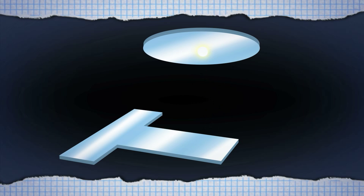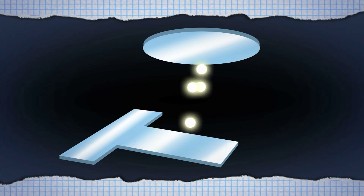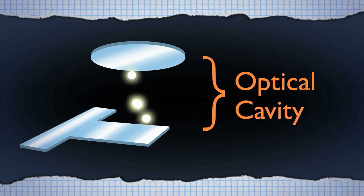The trick is to have a second massive mirror facing the cantilever. Each photon then reflects back and forth between the mirrors and hits the cantilever many times, multiplying each photon's impact. The two mirrors form an example of what is called an optical cavity.